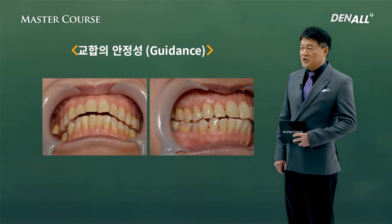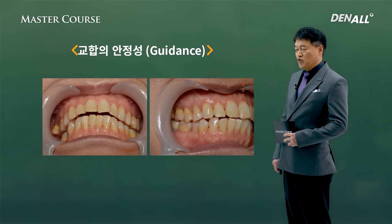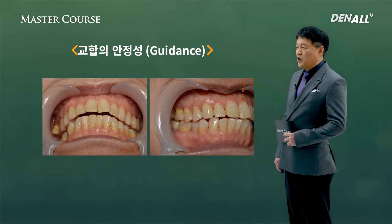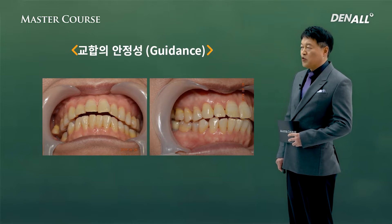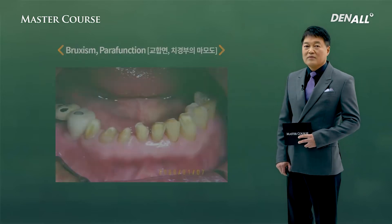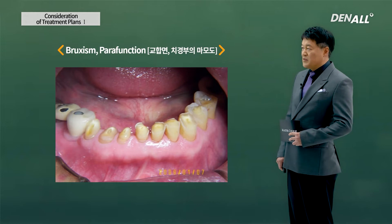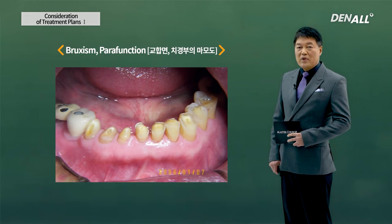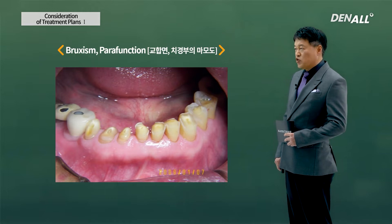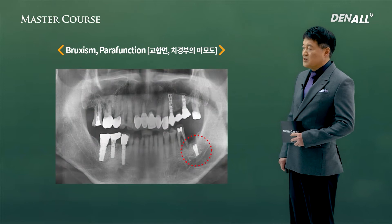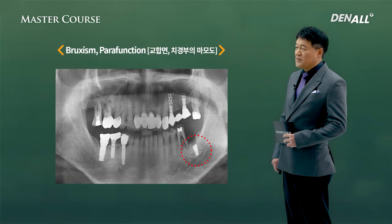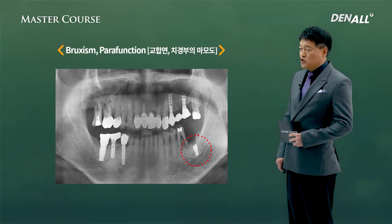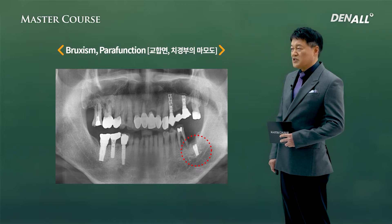Second is stability of occlusion. If the stability of occlusion is not achieved, the prosthetic process after implant placement can be difficult, with high possibility of overloading the implant prosthesis. There is severe wear on the surface, indicating bruxism or parafunction. Due to wear in the posterior area, a 5 mm fixture was fractured. After delivering prosthesis, you need to regularly check up to adjust occlusion. Splint or other complementary measures can help.